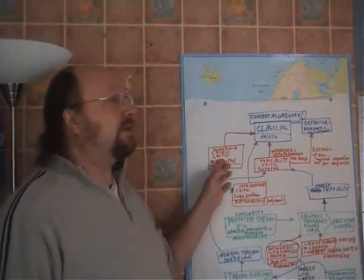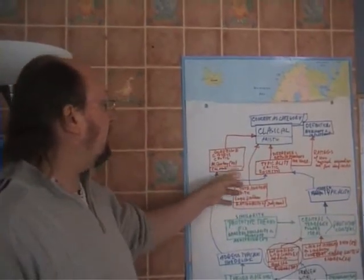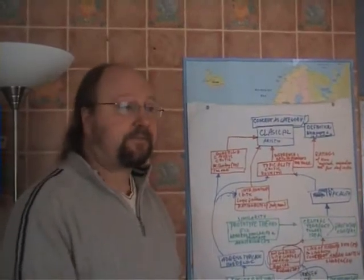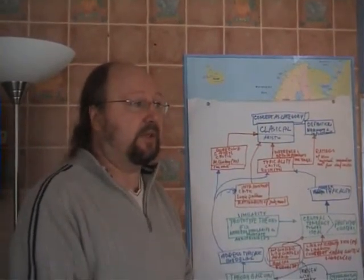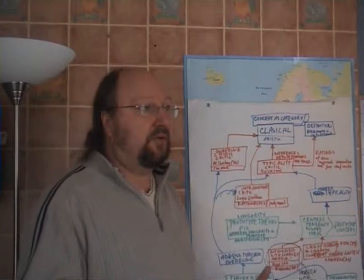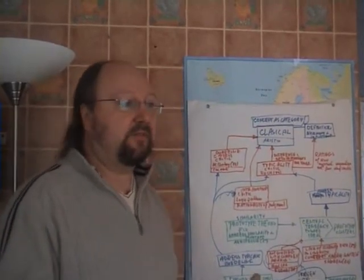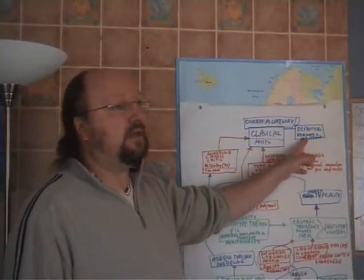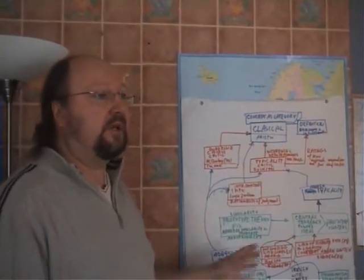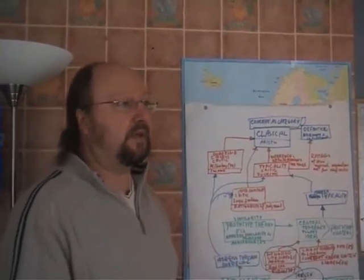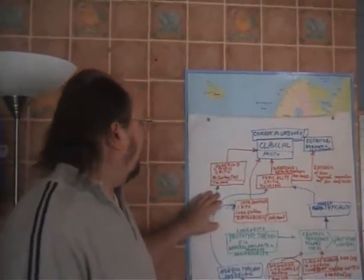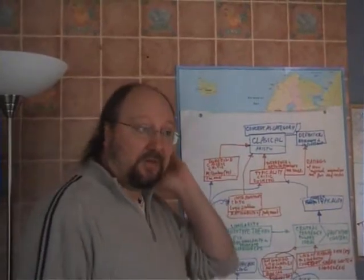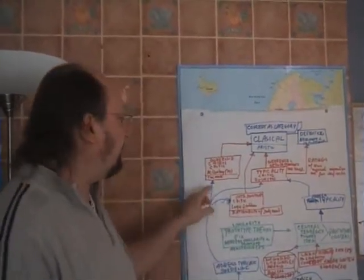The next critique was the borderline cases, by McCluskey in 1938. He discovered that there are members who don't have very well-defined membership. According to classical theory, membership has to be in or out — it cannot be on a border. He found that color, for example, is one of those things which falls on a borderline.